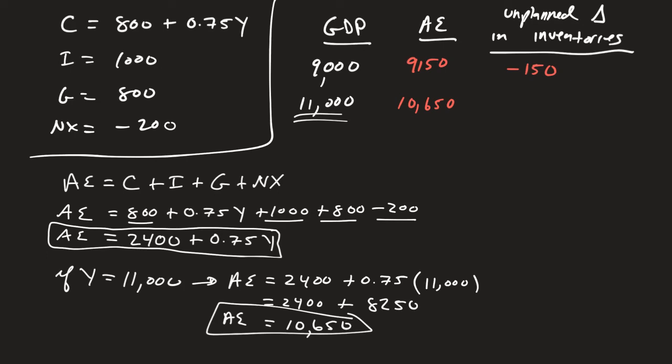And so what you can notice is that the overall GDP is 11,000, but we only spent 10,650 out of it. So that's 350 that we're going to see added to my unplanned changes in inventories. Remember, the unplanned changes in inventories is always going to be the GDP, and then we're going to take out all of the aggregate expenditure, because this is the overall production, this is the overall spending. So the changes to inventories are going to be the difference in that.